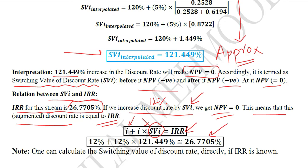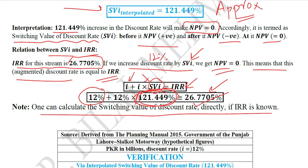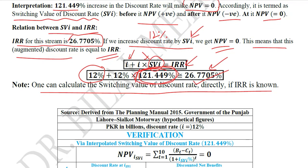One can calculate the switching value of discount rate directly if the IRR is known. We can mathematize this: the original discount rate plus the switching value of discount rate percent equals the IRR. So if IRR is known and the discount rate is given, we can find the switching value through simple algebra. This is a small DIY for you — using any example, extract the value of SVI and substitute the values of the discount rate and IRR to get the switching value.